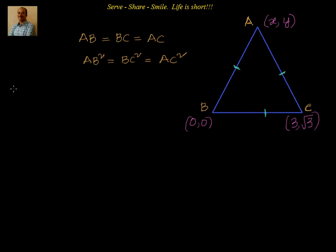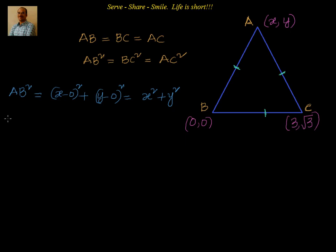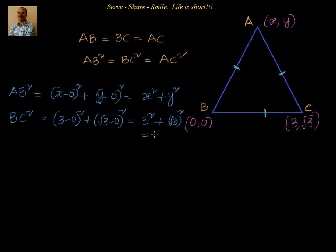So first let's find out AB². AB² = (x − 0)² + (y − 0)² = x² + y². Next, BC² = (3 − 0)² + (√3 − 0)² = 3² + (√3)² = 9 + 3 = 12.